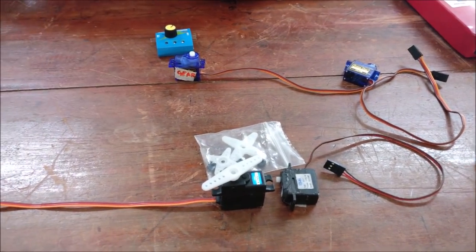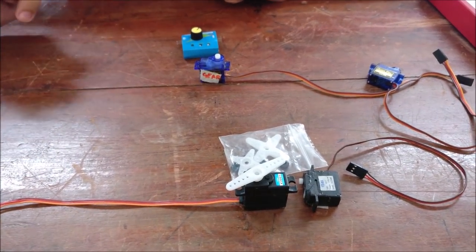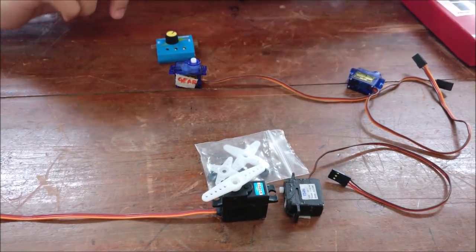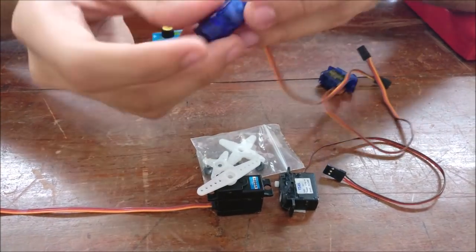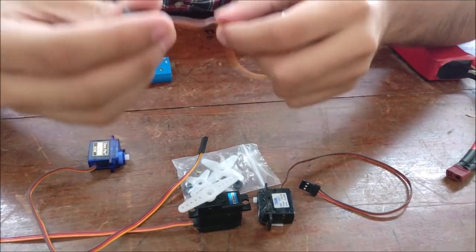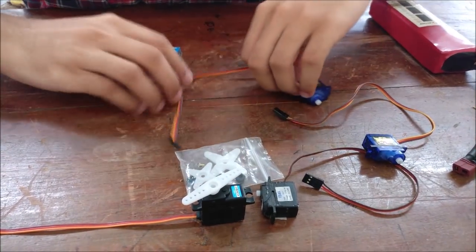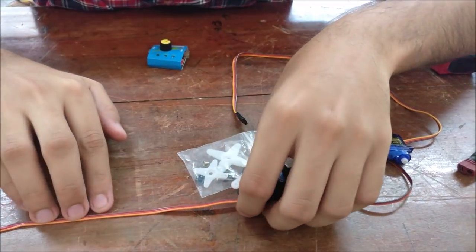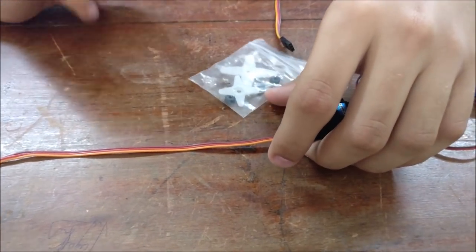Now let's have a look at the servos. A typical servo looks like a rectangular box with a motor shaft coming out of one end and a connector coming out the other end. There are three wires. One is power, one is control and one is ground.